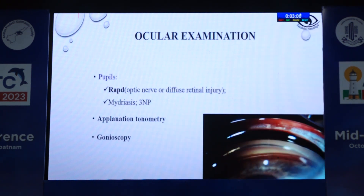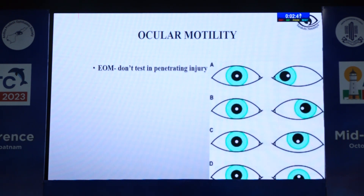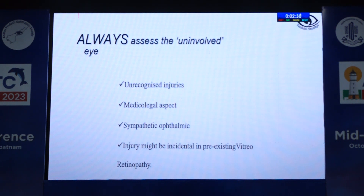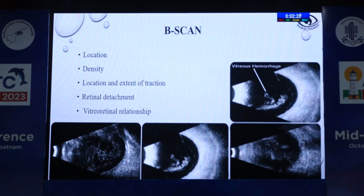Pupils should always be examined, and applanation tonometry and gonioscopy should always be done in cases of blunt trauma. Evaluation of the retina is equally important — try to avoid scleral depression in trauma cases. Extraocular motility testing should be done in all cases, and it is important to always assess the uninvolved eye to recognize unrecognized injuries, for medico-legal aspects, and in case injury is an incidental finding. B-scan helps in diagnosing, surgical planning, and prognosticating, and tells you about location, density, and associated vitreoretinal relationships.